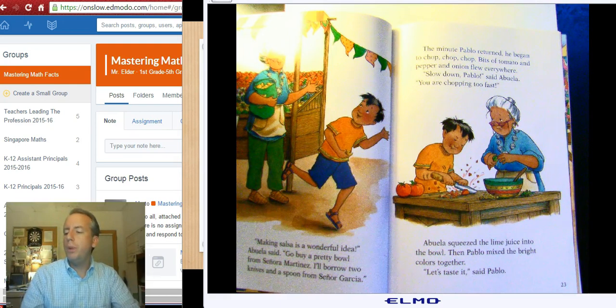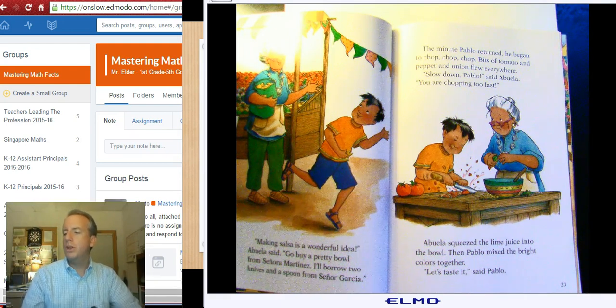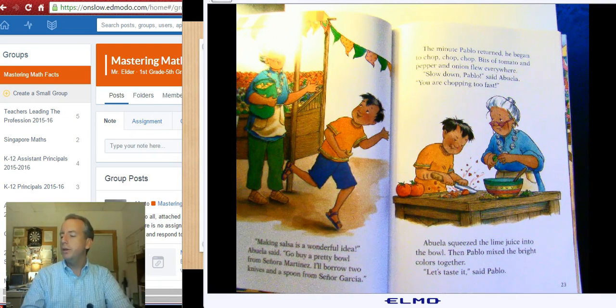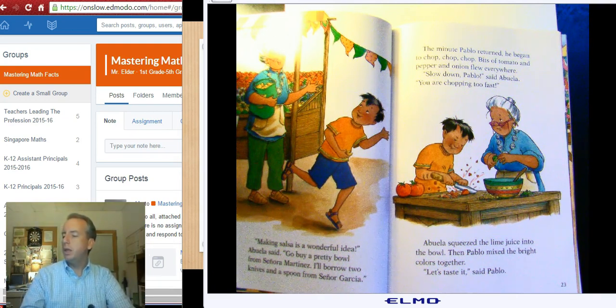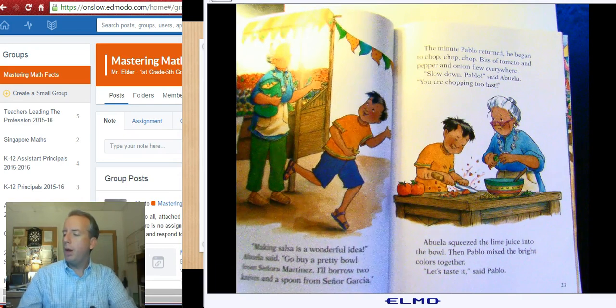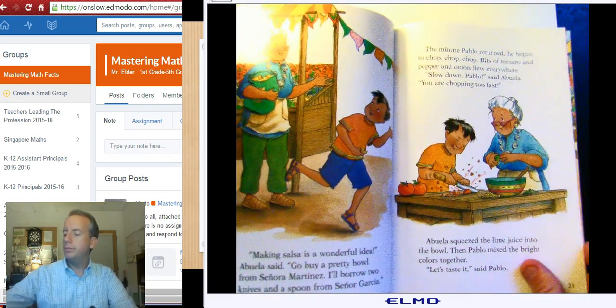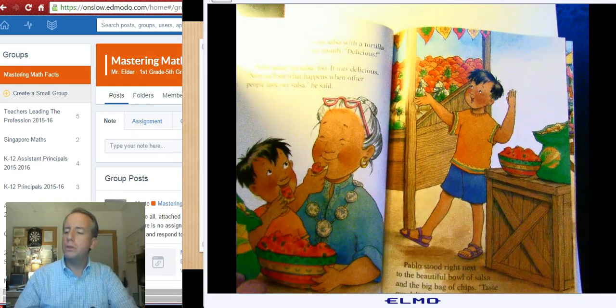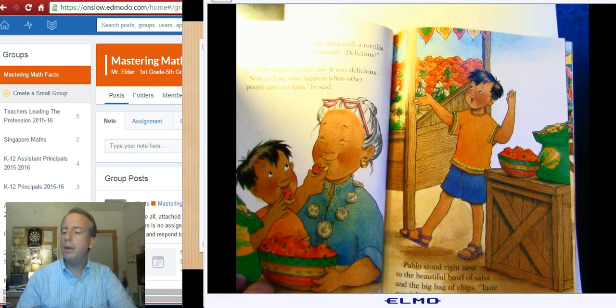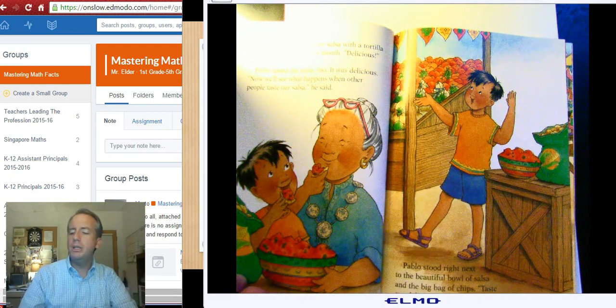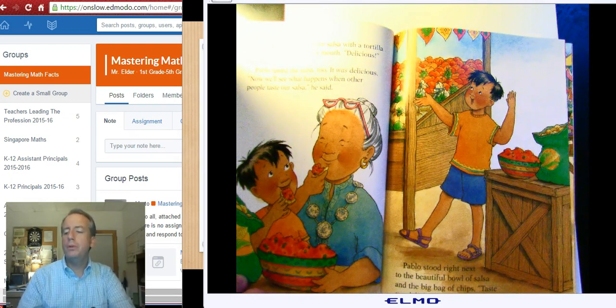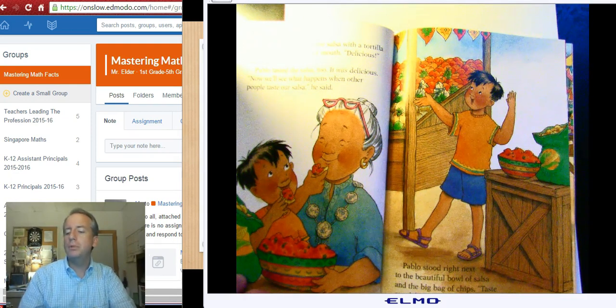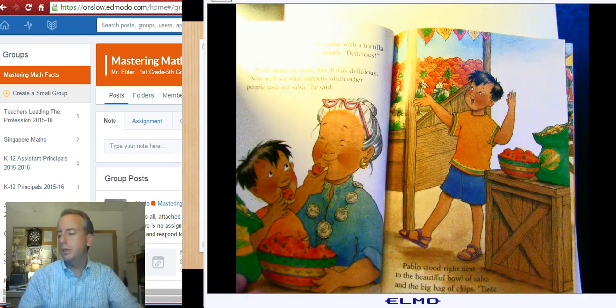Slow down, Pablo, said Abuela. You are chopping too fast. Abuela squeezed the lime juice into the bowl. And then, Pablo mixed the bright colors together. Let's taste it, said Pablo. Abuela scooped up some salsa with a tortilla chip and popped it in her mouth. Mmm, delicious, she said. Pablo tasted the salsa, too. It was delicious. Now we'll see what happens when other people taste our salsa, he said.